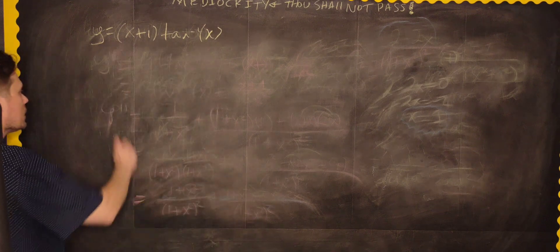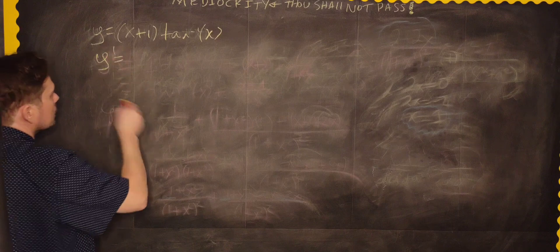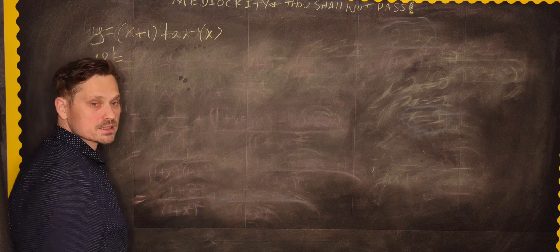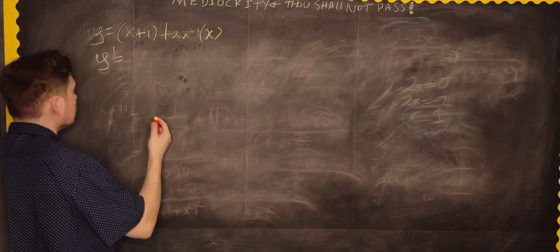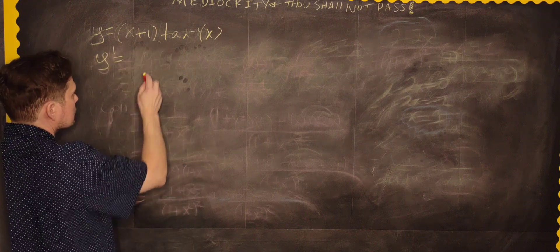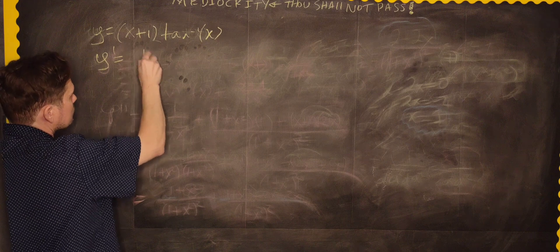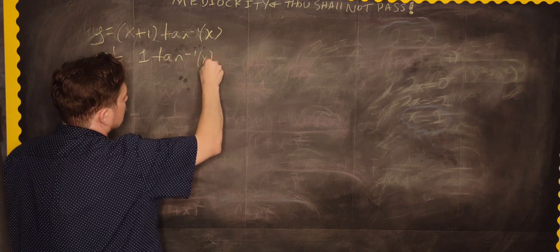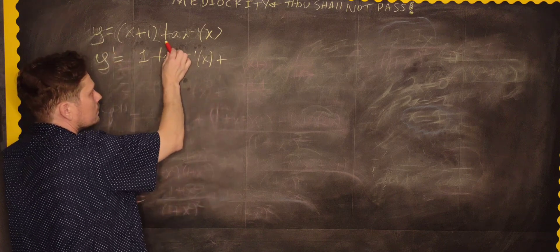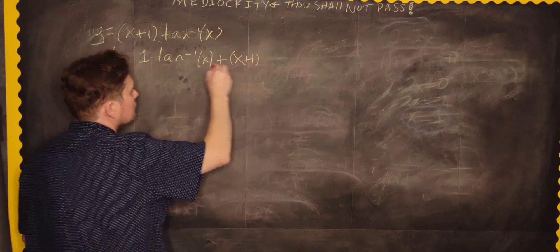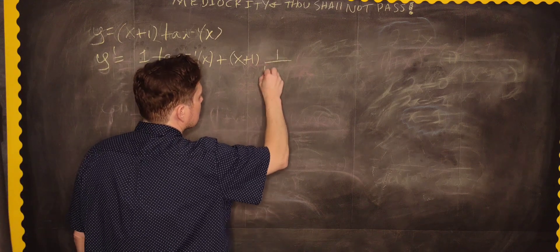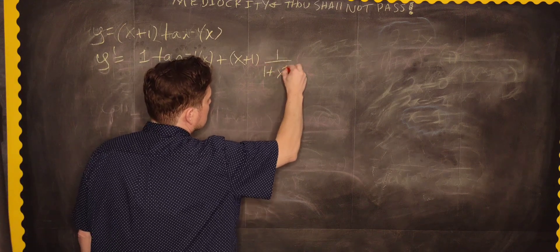A lot of differentiation exercise. So y prime, by the product rule, because x plus 1 is a function and tan inverse of x is another function, you're going to have the following: differentiate the first one, that's going to leave us just the derivative of x which is 1, copy the tan inverse of x for now, and you're going to add to it the derivative of, well keep the x plus 1, then add to it the derivative of the tangent inverse of x. That's just 1 over 1 plus x squared.